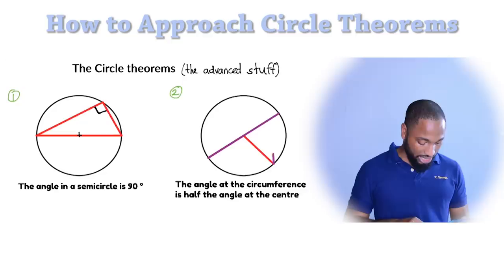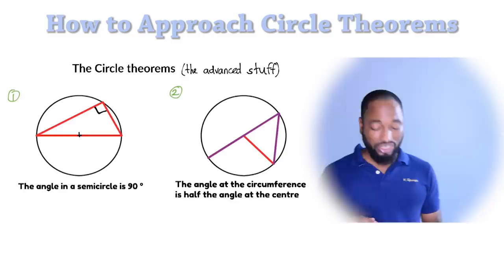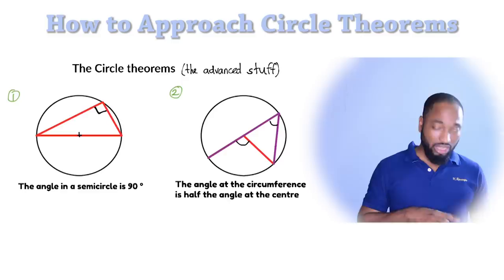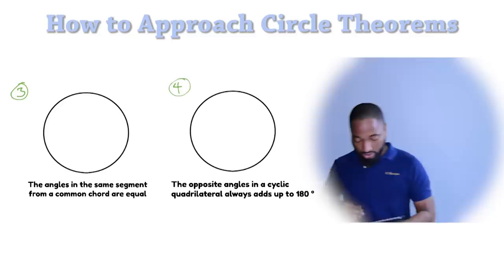Now, let me show you how they can disguise this stuff. Right. Suppose I drew a next angle like this. It can be harder to see this rule applying in that condition. But it is. It still applies. This angle here will still be twice this angle there. So this is how it's normally disguised in the paper. Alright, let's move on.